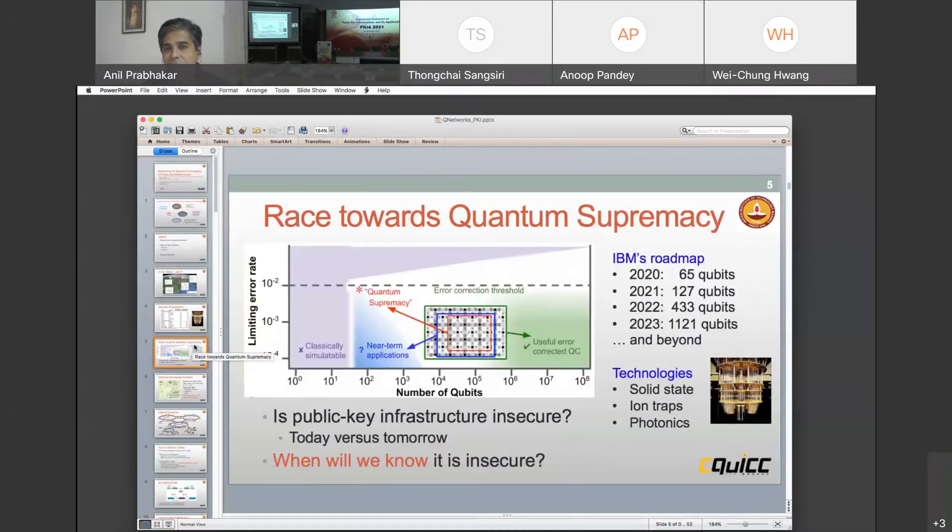So there is this race towards quantum supremacy. We need about 10,000 qubits before we can start running near-term applications. What is the roadmap? IBM has put out a roadmap that by 2023, they'll have a thousand qubits. In 2021, actually they've already released 127 qubits and it will be available to researchers later this month, maybe in the next few days or next week.